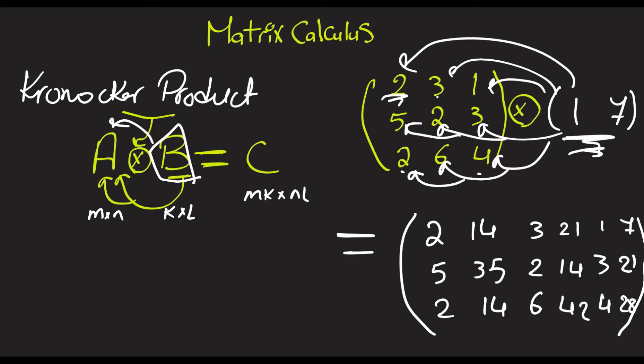So yeah, this is the final result. This matrix is 3 by 3, this one is 1 by 2, this one has to be 3 by 6.